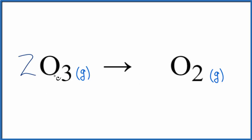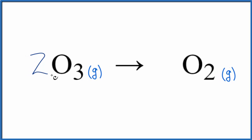...we put a coefficient of two in front of the O3, now two times three gives us six oxygen atoms. Here on the product side, we put a coefficient of three. Three times two, that gives us six.